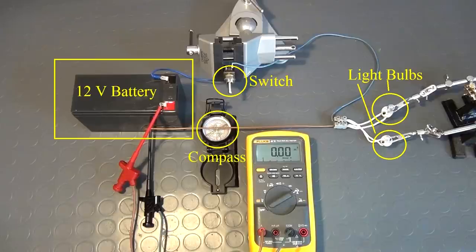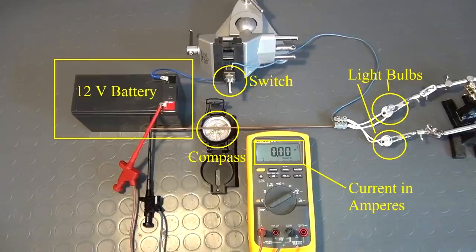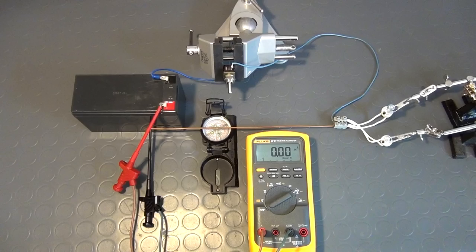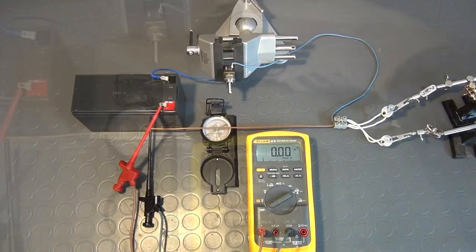Here you see the real-life setup. On the left, the battery. On the right, the two light bulbs. Up here, the switch. And down here, you see the compass, which is, for this experiment, placed directly under one of the wires. The DMM, by the way, is measuring the current flowing through the circuit. Now watch what happens as I close the switch.